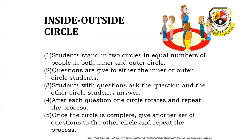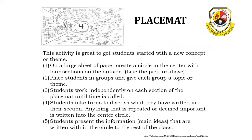Then you have the Inside-Out Circle, where you have two circles — an inner circle and an outer circle. Questions can be given to either circle. For example, if the question is given to the outer circle, those students ask the questions to the inner circle. After the inner circle students answer, they rotate the process and ask the others that question. By the end, those in the inner circle discuss first and give answers to those in the outer circle, then the outer circle discusses another question and gives the answer to the inner circle.